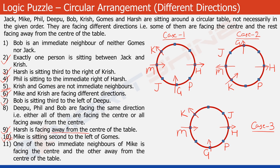Look at statement 7: Bob is sitting third to the left of Deepu. In Case 1, the two vacant positions are examined — Bob and Deepu must occupy them, but in those positions, Bob cannot be sitting third to the left of Deepu. This violates statement 7, so Case 1 is incorrect and ruled out. From now on, we only consider Cases 2 and 3.